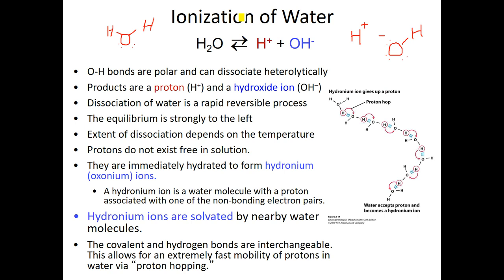Water is capable of ionization, but if we just have a beaker of water, it's not all going to magically turn into protons and hydroxide ions. This is a reversible process constantly going back and forth, and the equilibrium strongly favors the left — staying as water. In reality, protons are not very stable; they don't hang out by themselves. We actually form hydronium ions — a water molecule plus an extra proton, written as H₃O⁺.